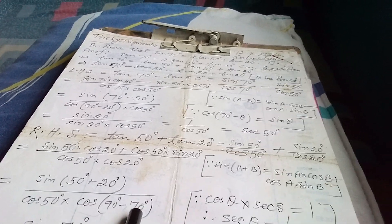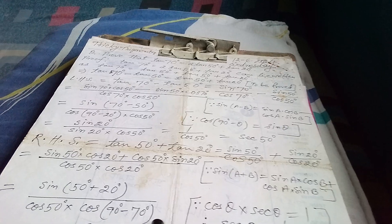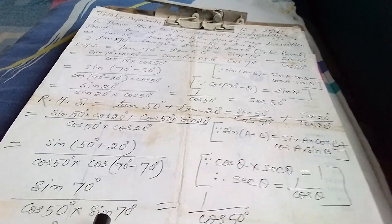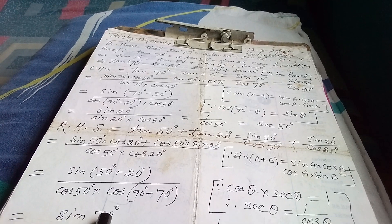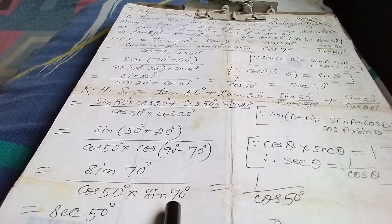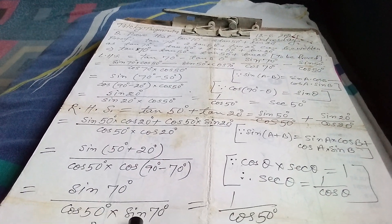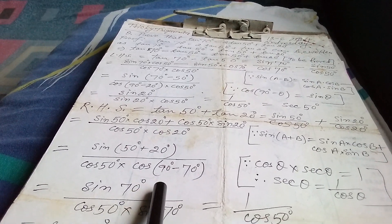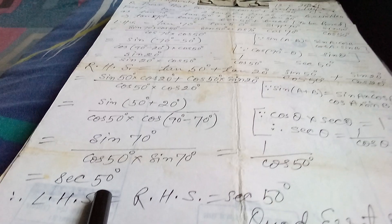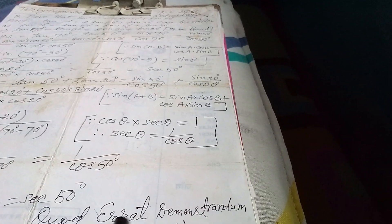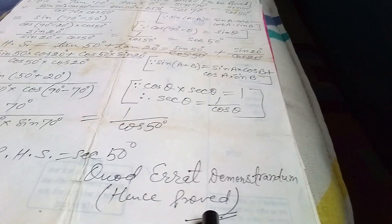Now cos20° can be written as cos(90°−70°), which equals sin70°. So we have sin70° over cos50°·sin70°. sin70° in the numerator and denominator cancel, leaving 1/cos50° = sec50°. We find that LHS equals RHS, both equal to sec50°. Hence proved — Q.E.D. Thank you, if you like please share and subscribe.